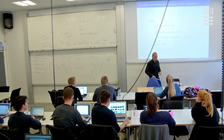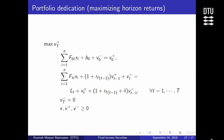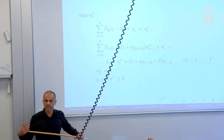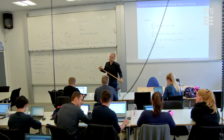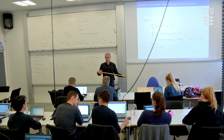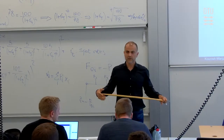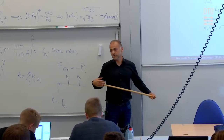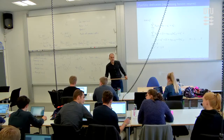The slight variation for maximizing horizon return is essentially the same model — the constraints are identical. The only change is that instead of a free budget v₀ being minimized, we now have a fixed budget v₀, and we maximize vT⁺. Any questions on the Dedication model? For the next two and a half hours, work on bootstrapping the term structure of interest rates from the bond market data, and then work with the Dedication model as well. We'll take a short break and then go to the assignments.